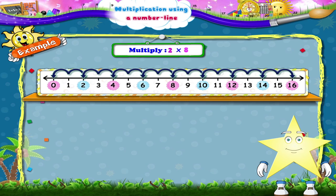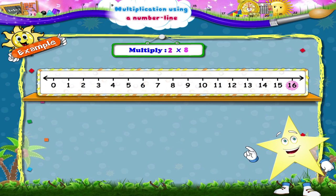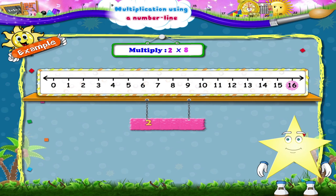Have you jumped eight times? Okay, we have reached the number sixteen. So two multiplied eight times is equal to sixteen.